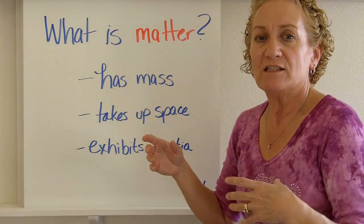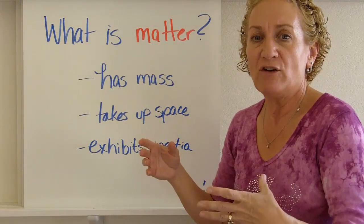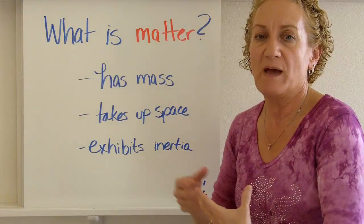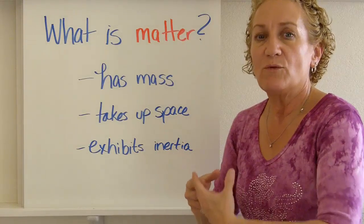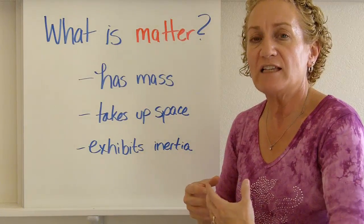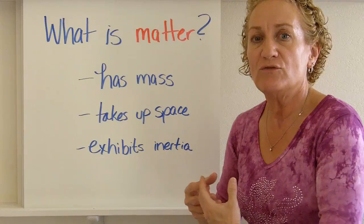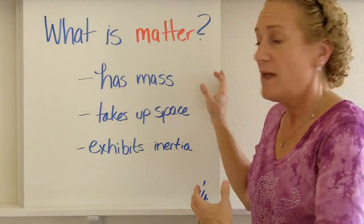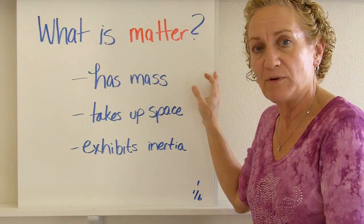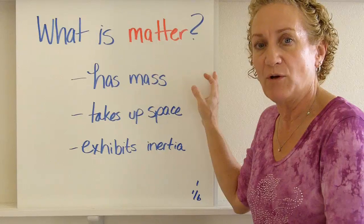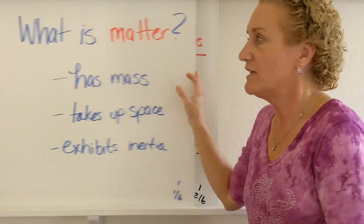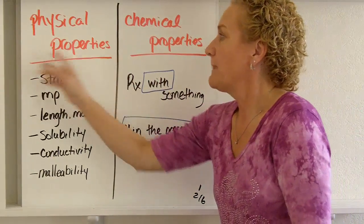Scientists like to find patterns and organize things — it's one of the things they do best. With matter, we're going to classify it according to a couple of different things: we may classify it according to its physical properties or its chemical properties. Let's discuss the difference between those.